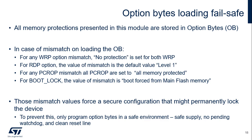During option byte loading, the options are read by double word. If the word and its complement are matching, the option word is copied into the option register. If the comparison between the word and its complement fails, a status bit OPTVR is set. Mismatch values are forced into the option registers. Upon an option byte programming failure for any reason, such as the loss of power or reset during the option byte change sequence, the mismatch values of the option bytes are loaded after reset. Those mismatch values force a secure configuration that might permanently lock the device. The STM32C0 implements a new feature: debug capabilities remain enabled in case of option byte mismatch.